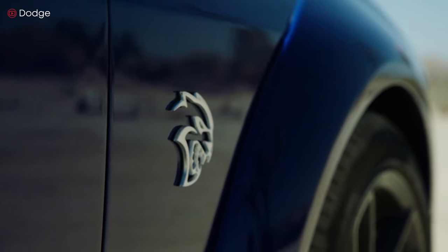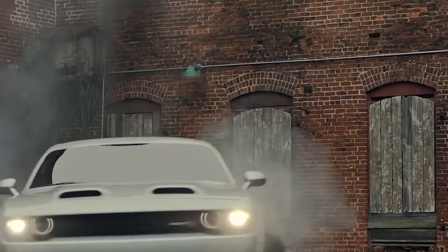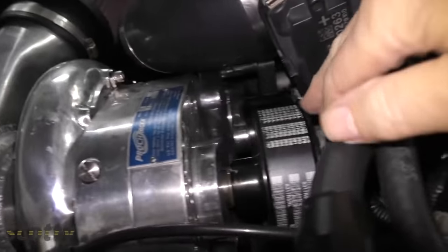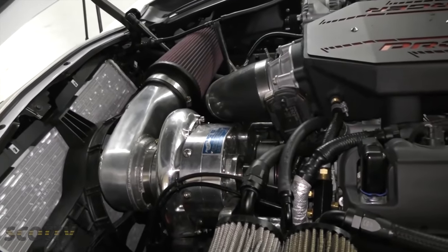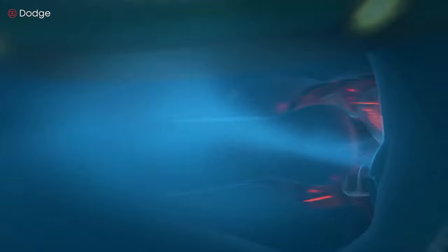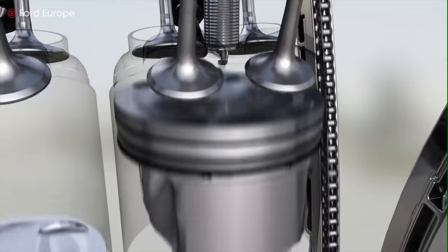A supercharger doesn't have a turbine, and it's not driven by the car's own exhaust gases. Instead, it's mechanically driven by belts that are driven by the engine. You have an air pump directly connected to the engine crankshaft by a belt or chain. It always turns and responds immediately to throttle, so you can immediately feel the engine's response when you press the gas.